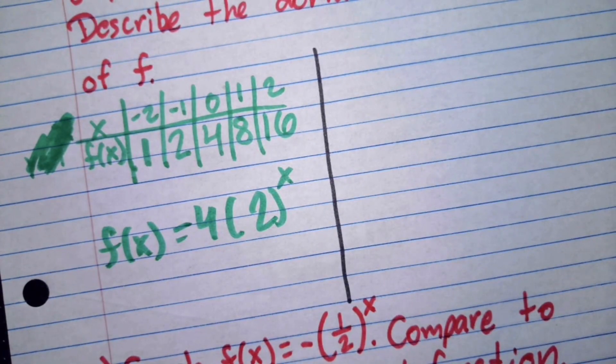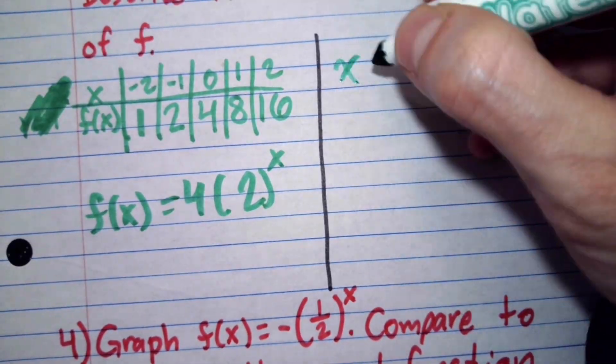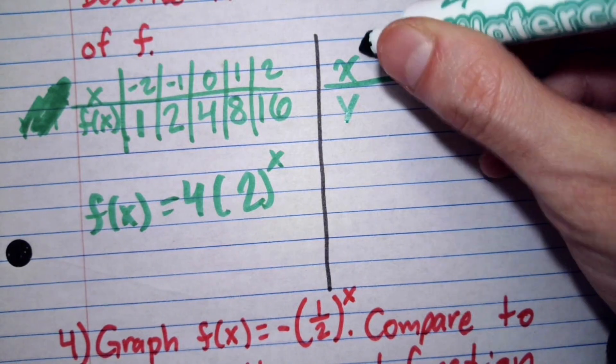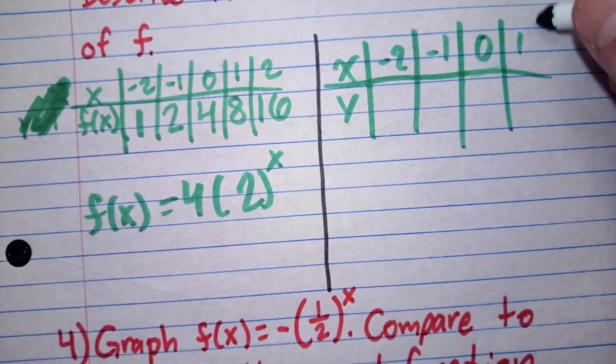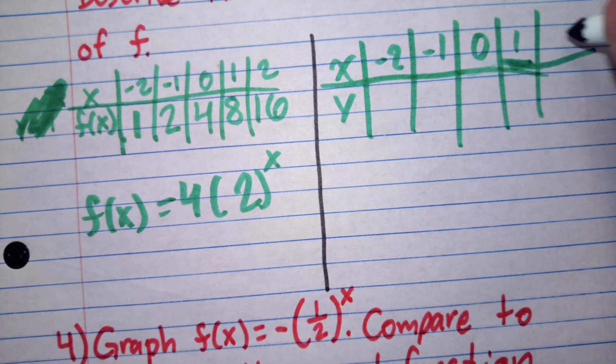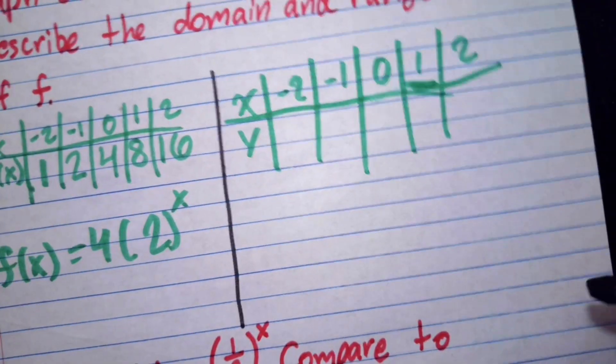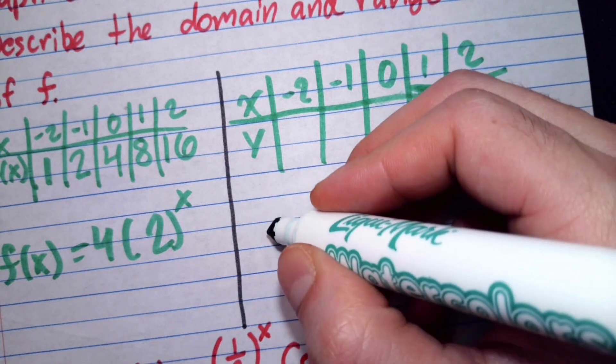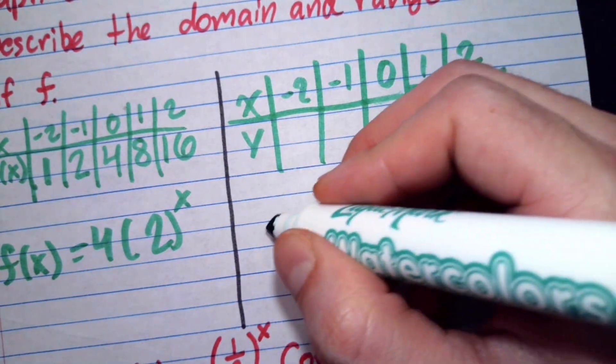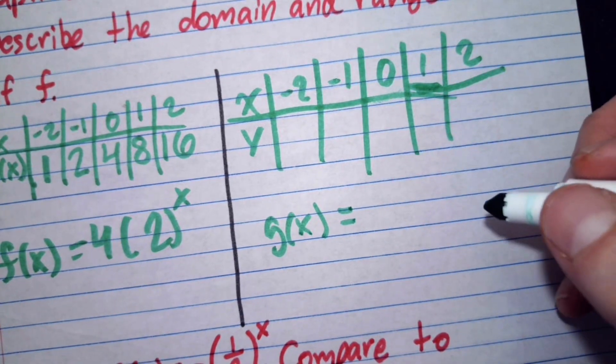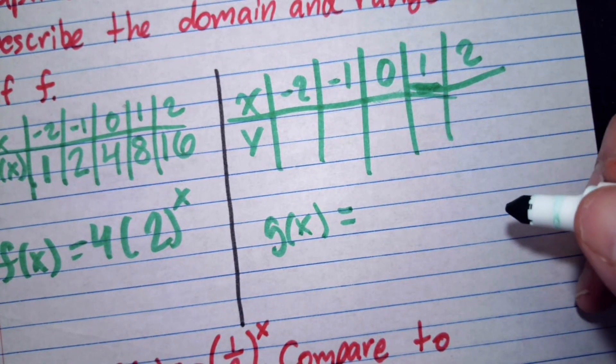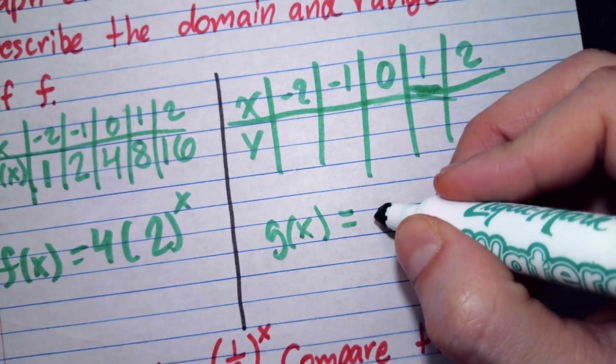They're telling us that we have to compare it to the graph of the parent function. So what I'm going to do is on this other side, I'm going to do again, some tables with the same x values. But now this time, we don't have f of x. Let's call the parent function g of x. And that parent function is going to look like this. We have 2 to the x.